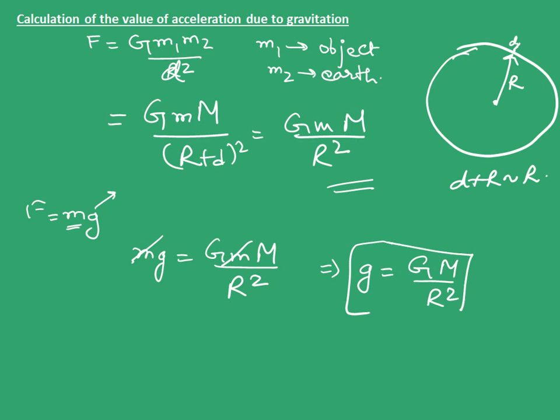Now, when we plug in the values of G, mass of earth, and radius of earth, we get the value of g to be 9.8 meters per second square.